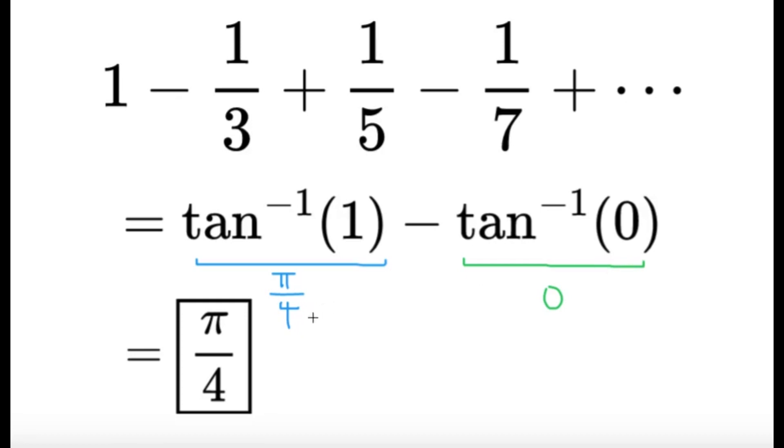So π over 4 minus 0, we get that this sum, 1 minus 1/3 plus 1/5 minus 1/7 plus so on and so forth, that's going to be equal to π over 4. And this will be our final answer.